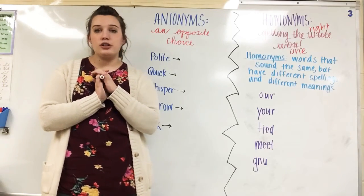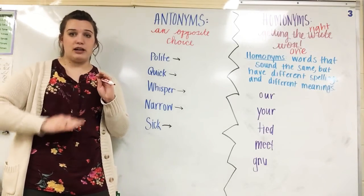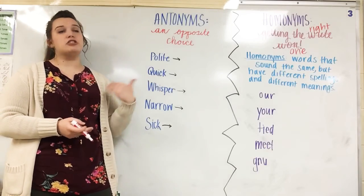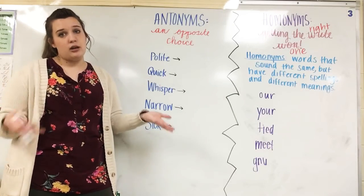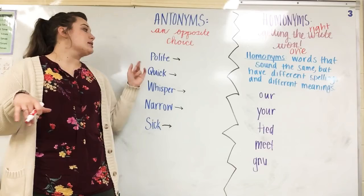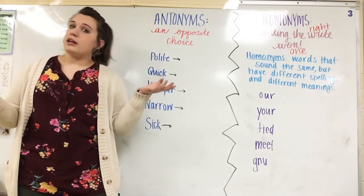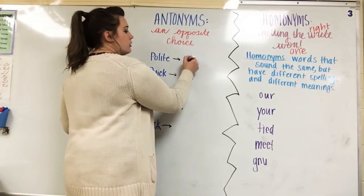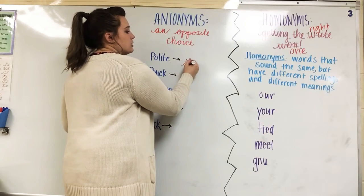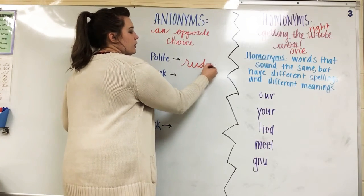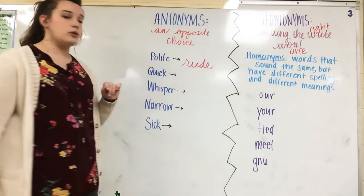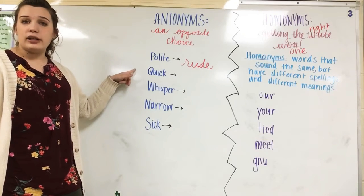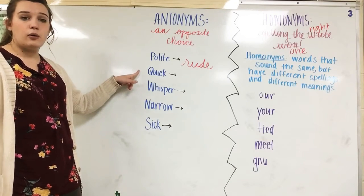On page number 248, you have an entire word bank of antonyms and 15 words that you have to match the opposite word choices with. So the opposite of polite would be rude — if you are not polite, you are probably rude. The antonym of quick, or the opposite of quick, would be slow.